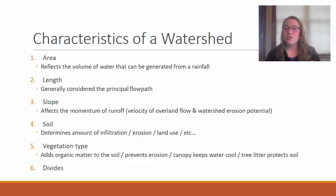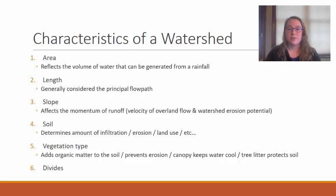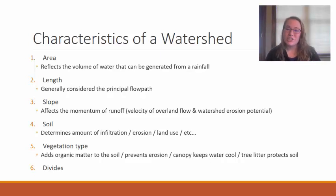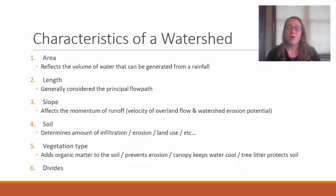Vegetation also influences the amount of sunlight reaching the water surface, which influences water temperature. Having a tree canopy or shrub canopy over the water surface will reduce that water temperature. Additionally, having vegetation and tree litter helps protect the soil from erosion from both rainfall and human activities.